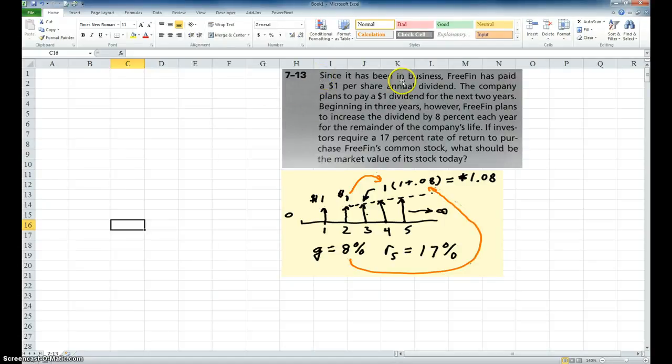It says, since it has been in business, FreeFin has paid a dollar per share annual dividend. The company plans to pay a dollar dividend for the next two years. Beginning in three years, however, FreeFin plans to increase the dividend by 8% each year for the remainder of the company's life. If investors require a 17% rate of return to purchase FreeFin's common stock, what should be the market value of a stock today?